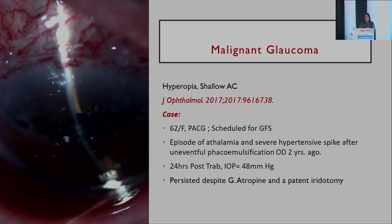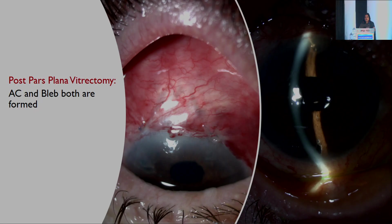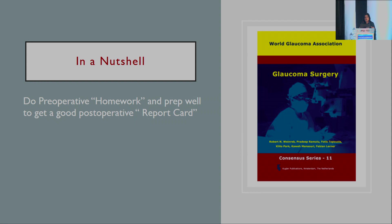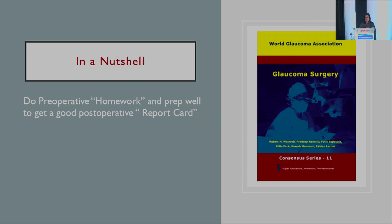Malignant glaucoma is more likely in patients who are hyperopes and have shallow anterior chambers — in India we have many patients with primary angle closure glaucoma, so we must be particularly vigilant. In a nutshell, doing thorough preoperative homework, prepping the patient well, and explaining all possible outcomes, combined with meticulous follow-up in the early postoperative period, is what gives us a good postoperative result. Thank you.